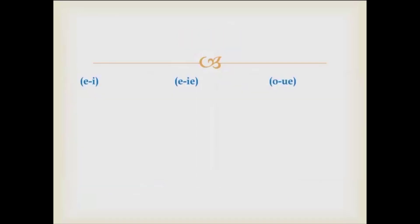These are our three categories of verbs so far: e to i, e to ie, and o to ue. We have one more category of verbs, which is really convenient — u to ue. Because this is the only verb that changes in that way. So in this entire category there's just this one verb: jugar, which means to play a sport.